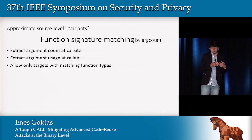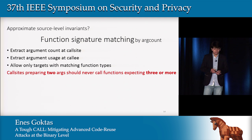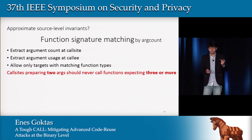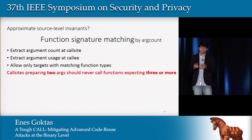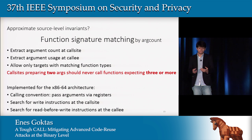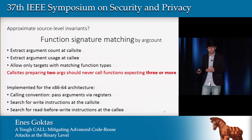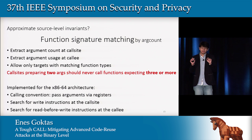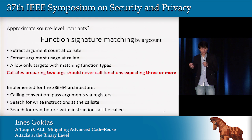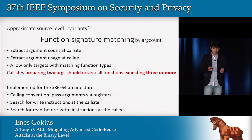Only functions that match with indirect call sites are allowed to be called during runtime. For example, assume that we have an indirect call site and TypeArmor determines that it prepares two arguments. Then this indirect call site is not allowed to call functions that actually expect three or more arguments. We implemented TypeArmor for 64-bit architecture, where the calling convention passes the first few arguments through registers. At the indirect call site, we look for instructions that write to these register arguments, and at the functions, we look for instructions that read the register argument before it is written.